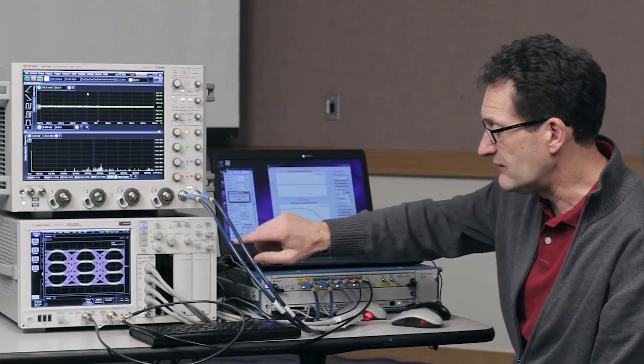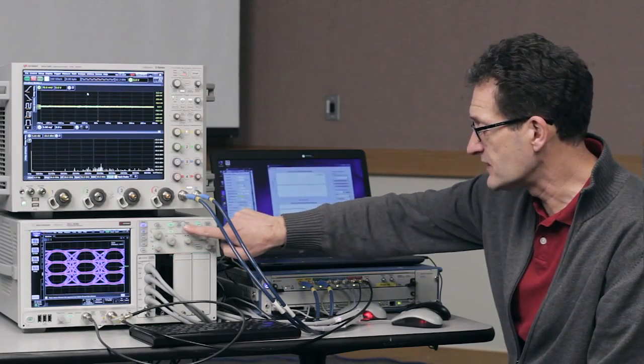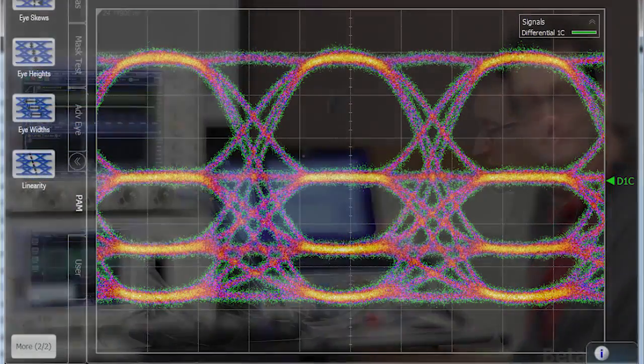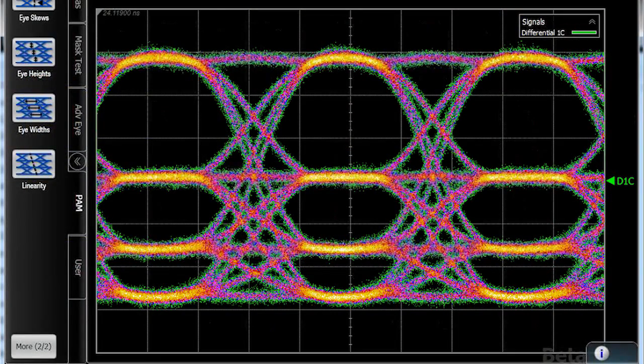Using AWG technology, you can influence the levels of your PAM4 signal and generate signals like this. So if you're driving an optical modulator that needs some pre-distortion, you can easily do that.